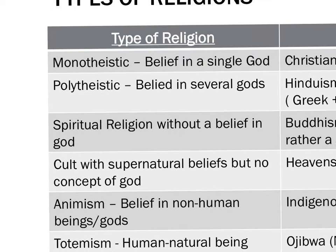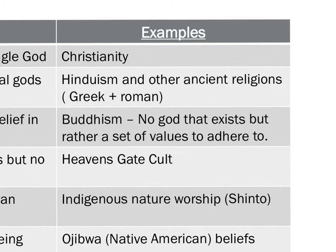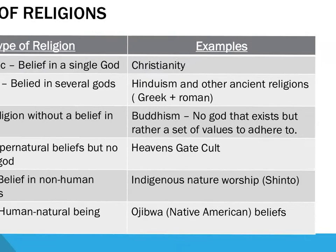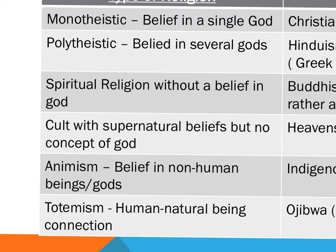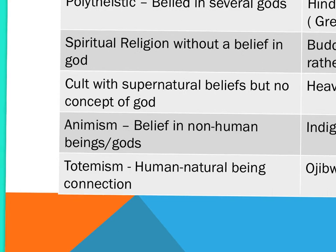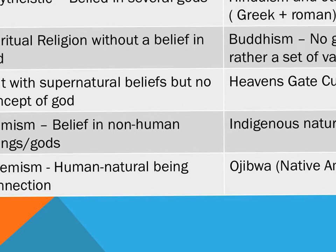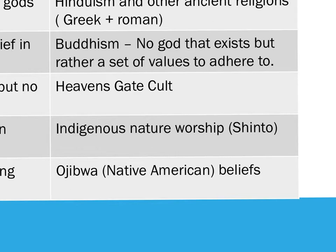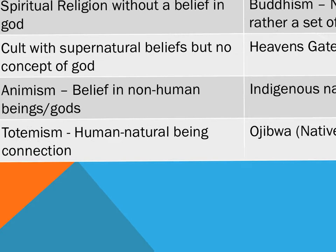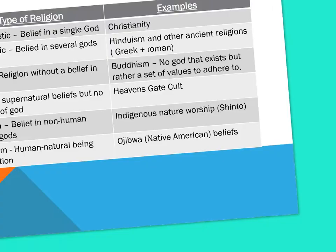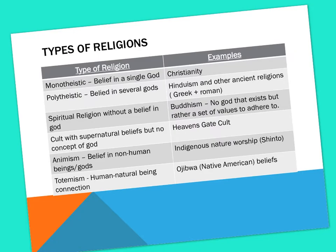We also have spiritual religion — religion without a belief in god — which encourages humans to behave in specific ways, to be kind to one another and to nature. An example is Buddhism, where no god exists but rather a set of values to adhere to, which Buddha provides. Then there is a cult with supernatural beliefs but no concept of god, such as Heaven's Gate. Animism is a belief in non-human beings or gods, encouraging connection between nature and humans — for example Shinto. Totenism involves a human-natural being connection, as seen in Ojibwa Native American beliefs.